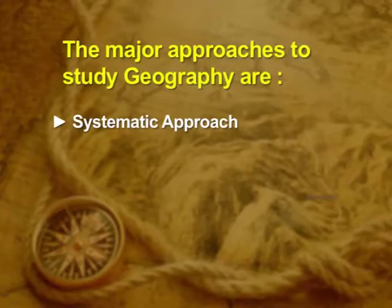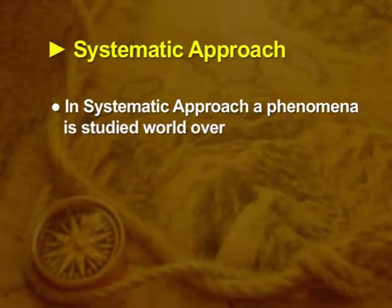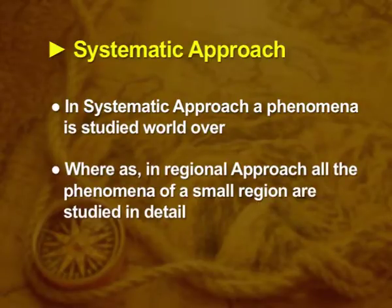Now let us look into the approaches. There are two major approaches to study geography — the systematic approach and the regional approach — and these are contrasting aspects. In the systematic approach, a phenomenon is studied world over, whereas in the regional approach, all the phenomena of a small region are studied in detail.